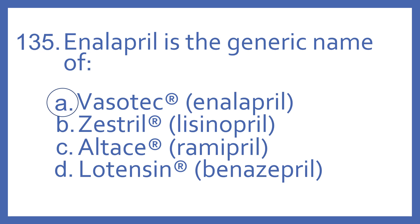And the answer is A. Enalapril is the generic name of Vasotec. Zestril is generic as lisinopril. Ramipril is the generic for Altase. And benazepril is the generic for Lotensin. And as you can see with their -pril suffix ending, those are ACE inhibitors used for high blood pressure.